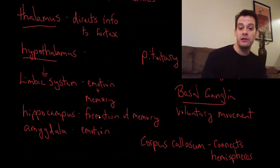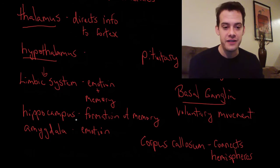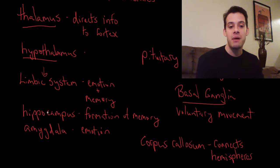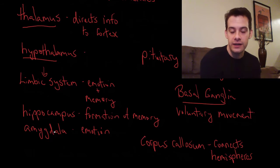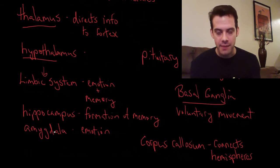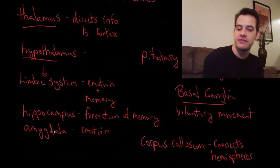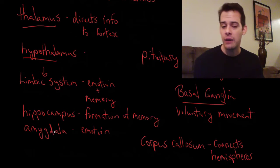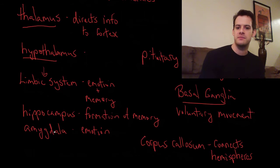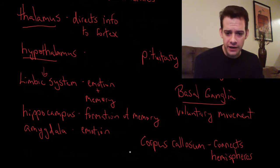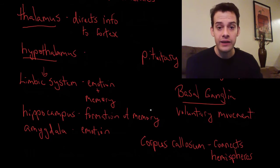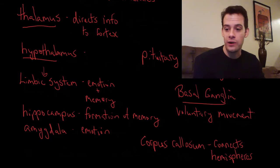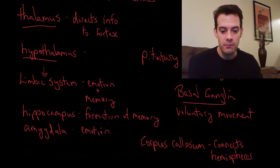It's important to remember that the limbic system has two halves — there's a hippocampus on the left side and on the right side, and an amygdala on each side as well. We'll see this when we look at some diagrams. The corpus callosum is the connection between the two hemispheres.